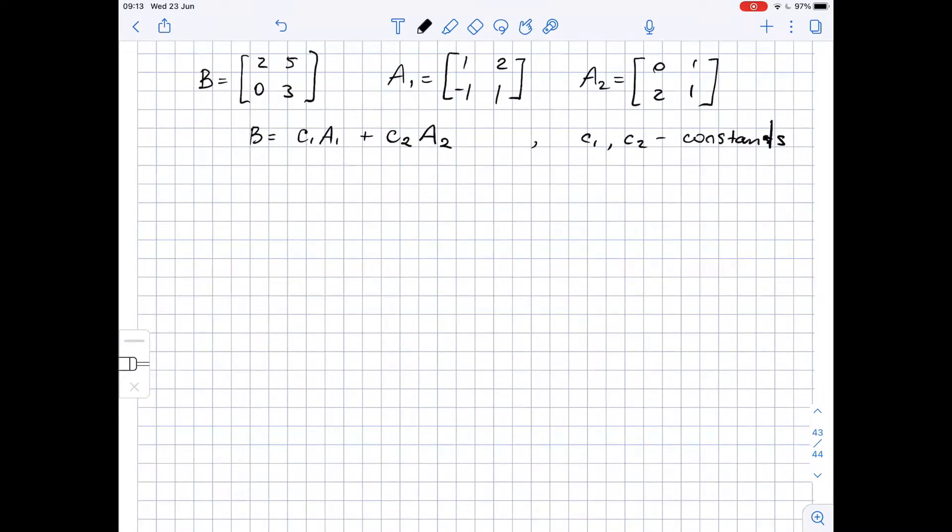Let's substitute matrices for B, A1, and A2. So we get this equals C1 times this plus C2 times this.